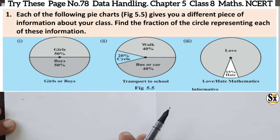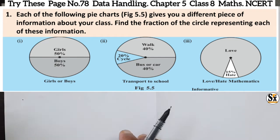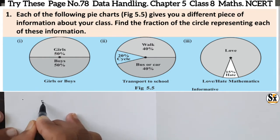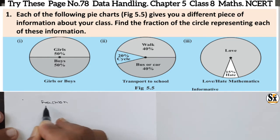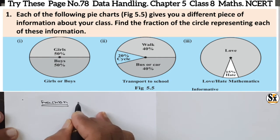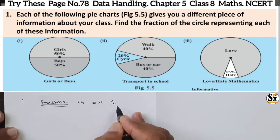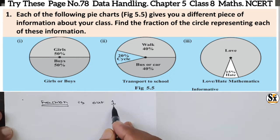In the 'Try This' section on page 78, chapter Data Handling, figure 5.5 gives different pieces of information about your class. Three pie charts are given. We have to find the fraction of the circle representing each piece of information. Always remember: fraction means out of one. If we add all the fractions, we get the number 1.